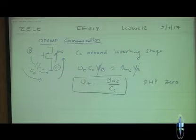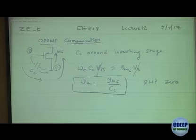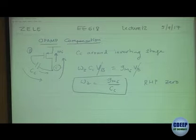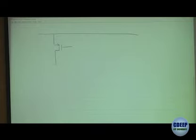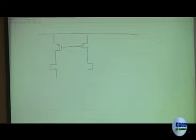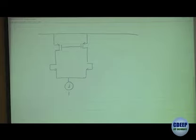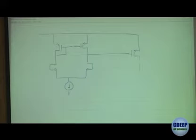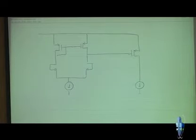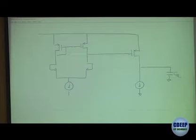There is one simple trick: remove the feed-forward path but keep the functionality the same. So in our op-amp with the second stage, current source, and compensation cap CA, we want to add CC but without the feed-forward path.